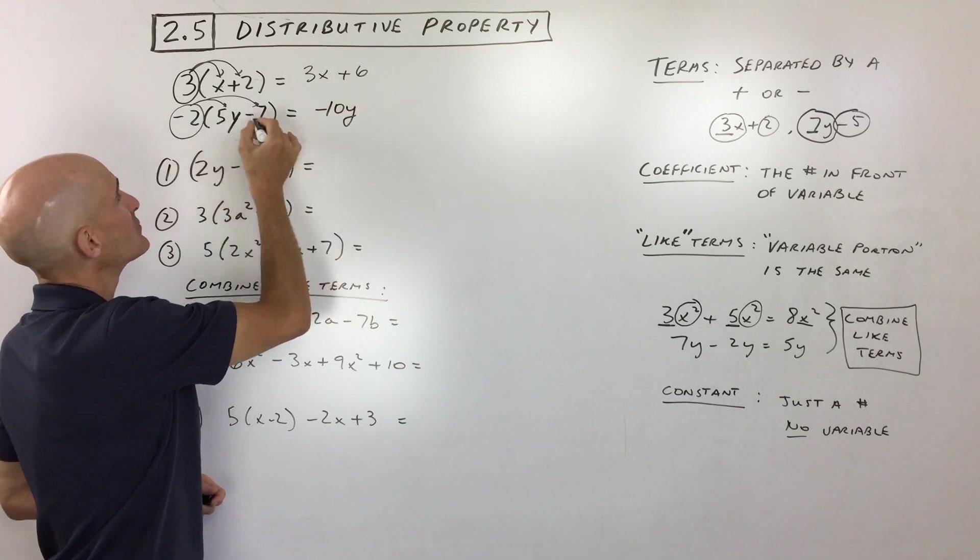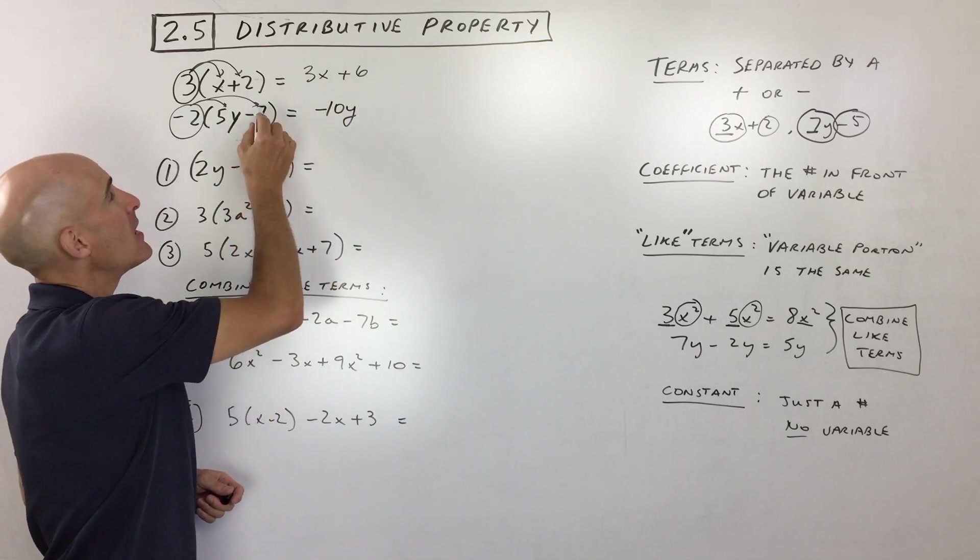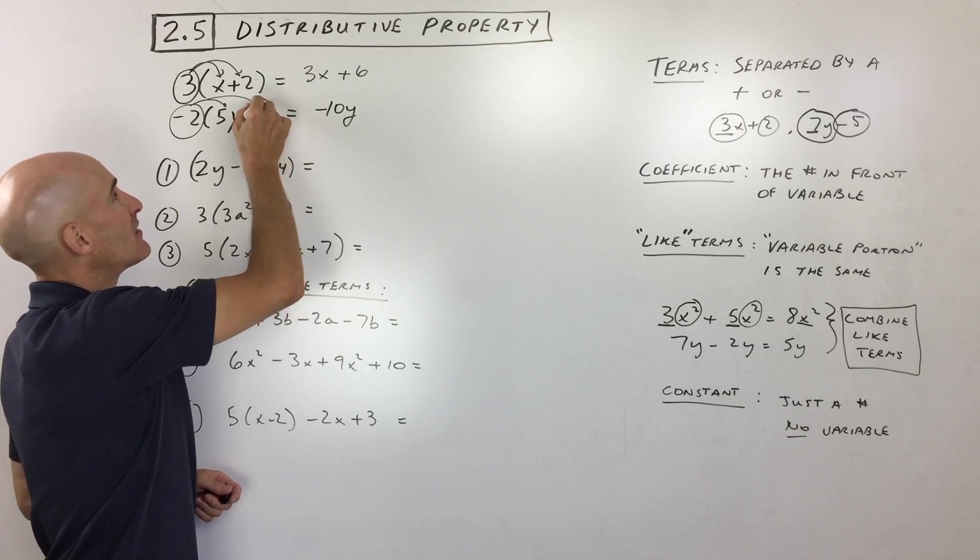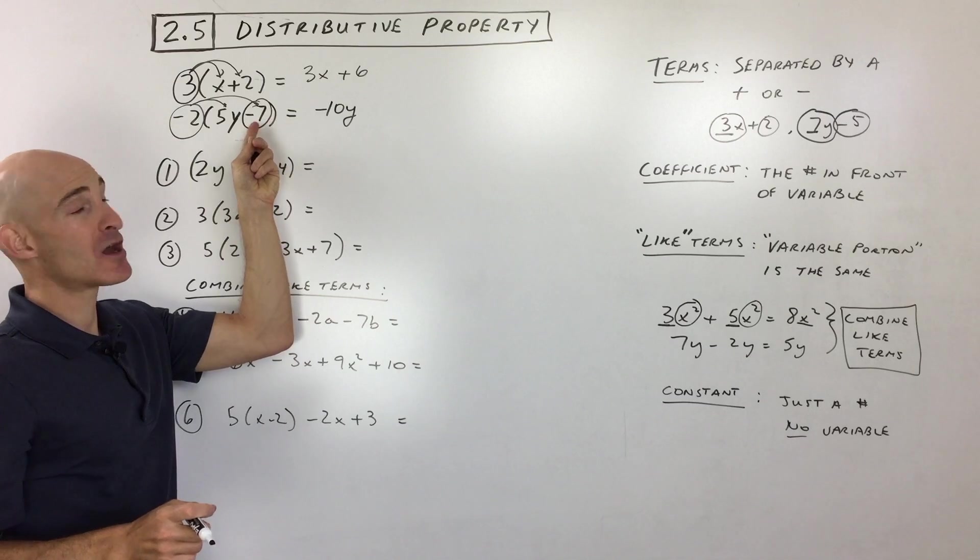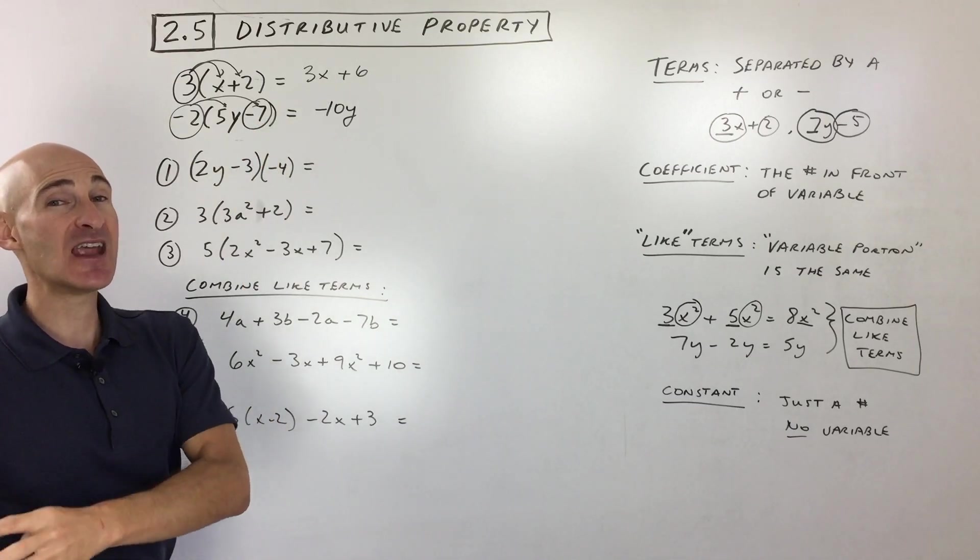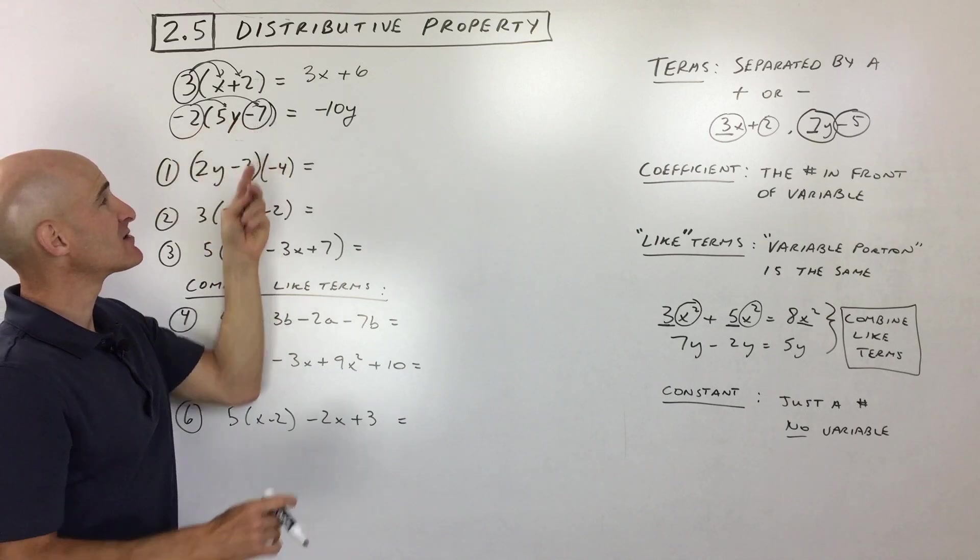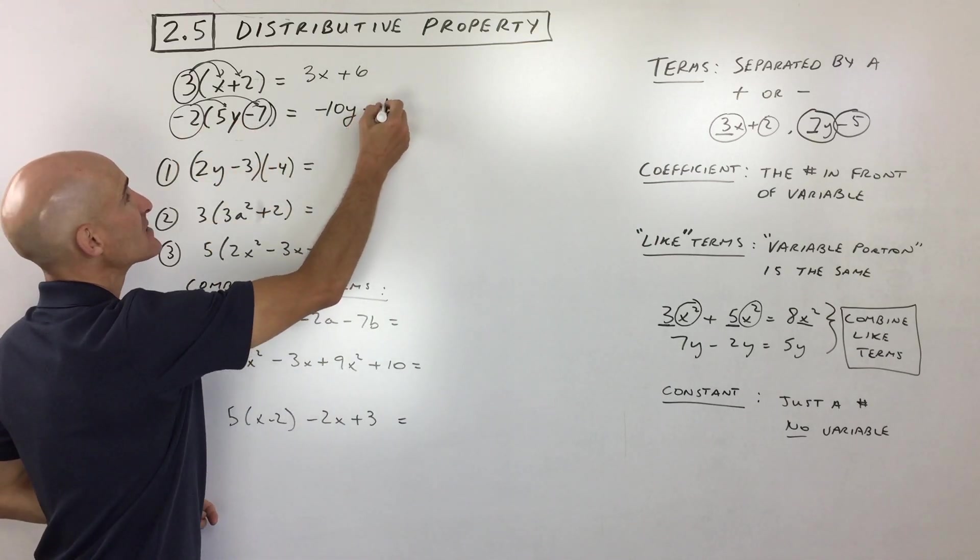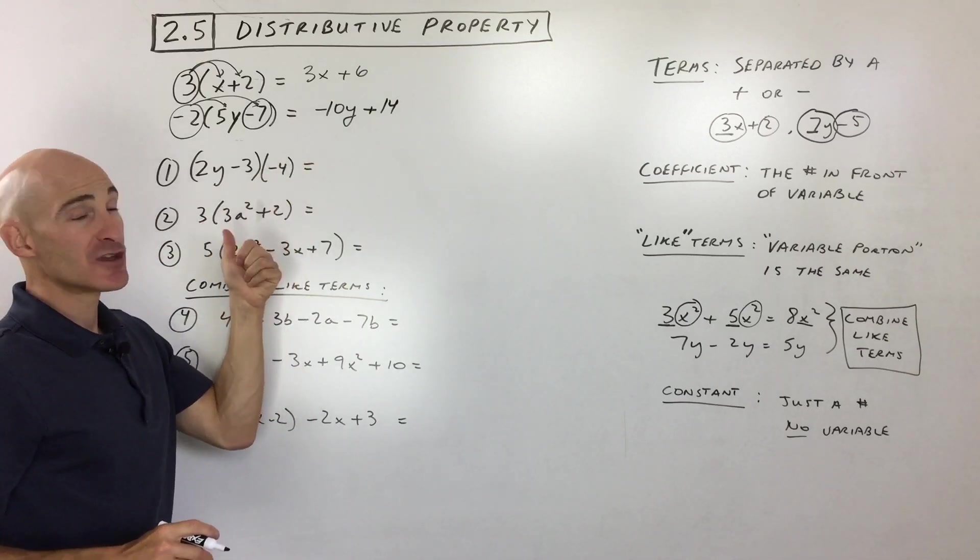So negative 2 times 5 is negative 10. Now this one tricks students a little bit right here. See this minus 7. Whenever you see a minus sign, you want to capture that sign that comes in front of the number, to the left of the number. Minus means the same thing as negative. When you see minus 7, that's a negative 7. So negative 2 times negative 7, positive 14. Remember, negative times a negative is a positive. So that's the distributive property. Let's do some examples.